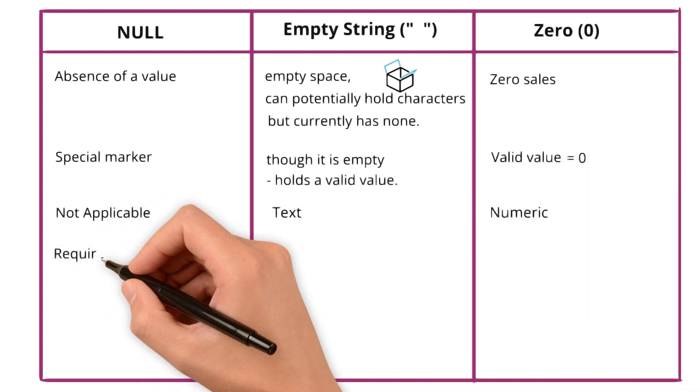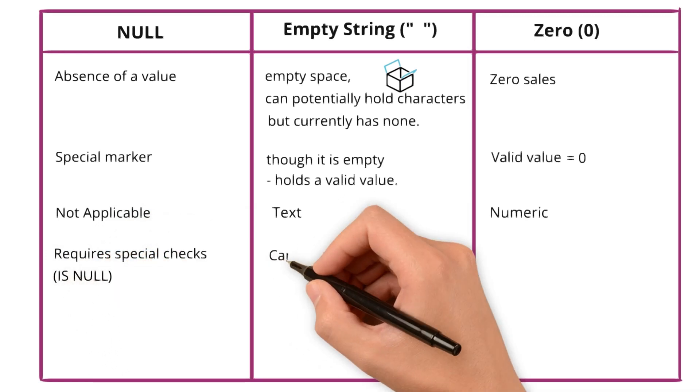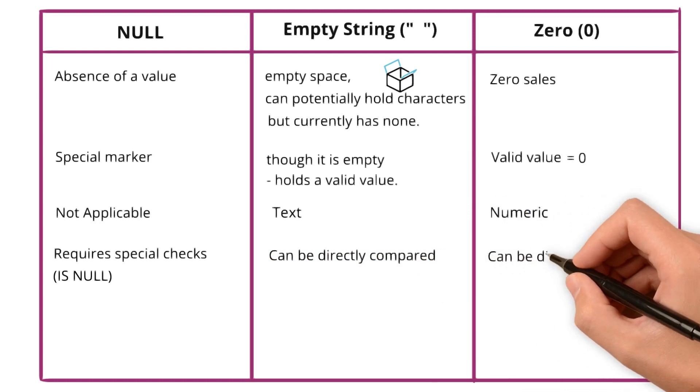Null require special checks to understand if the table has null data or not, whereas for empty string and 0 it can be directly compared.